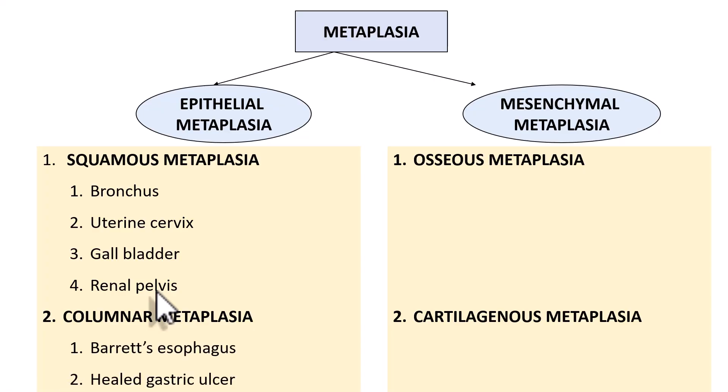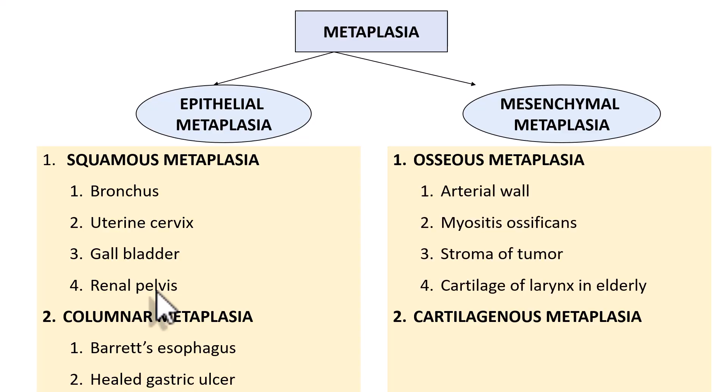Columnar metaplasia examples include Barrett's esophagus, where the lower end of the esophagus, normally lined by stratified squamous epithelium, gets replaced by columnar epithelium of the intestinal type. Another example is healed gastric ulcer. For osseous metaplasia, examples include the arterial wall, myositis ossificans, the stroma of certain tumors, and the cartilage of the larynx in elderly individuals. Cartilaginous metaplasia involves conversion into cartilage, and healing of fractures is an example.